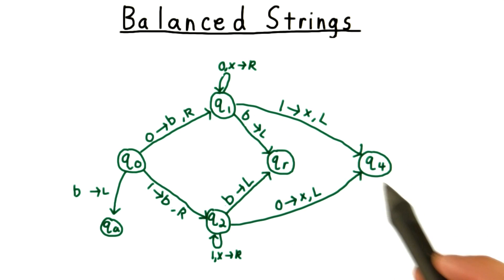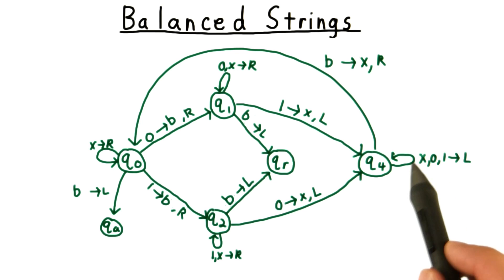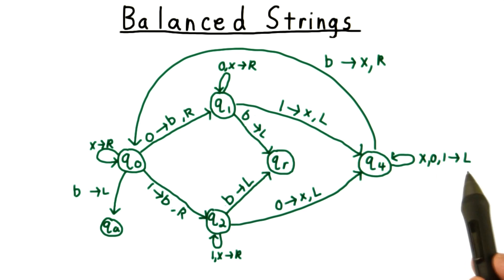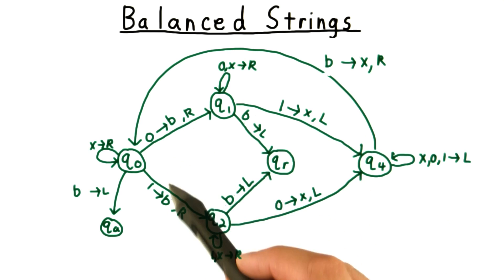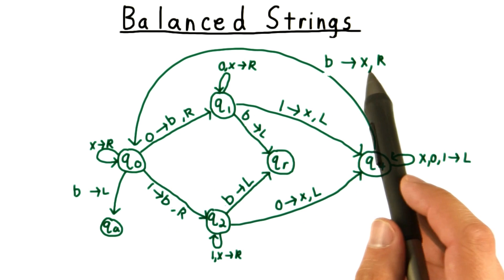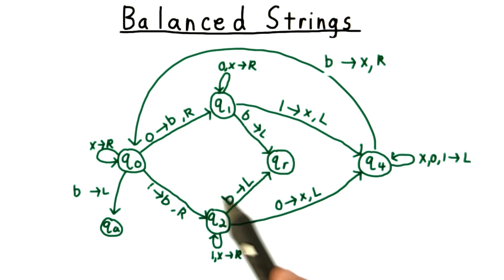Assuming we do find the match, we end up in state q4, which then rewinds. It moves left past all the x's, the 0's, and the 1's until it finds that blank symbol, which we crossed out initially in this transition here. It x's that out, and then moves to the right, so that we're ready to process the next symbol.